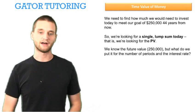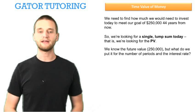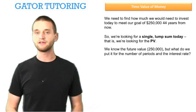We know the future value, $250,000, but what do we put in for the number of periods and for the interest rate?